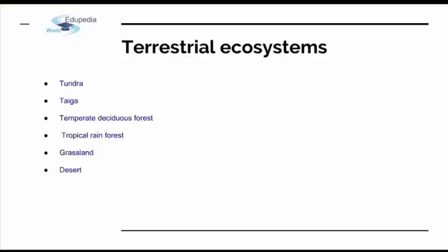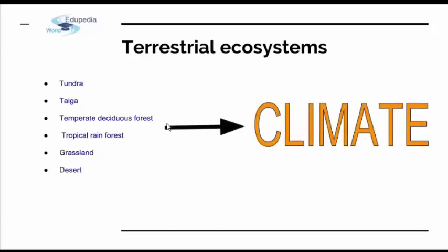Terrestrial systems, like aquatic ones, have their sub-regions as you can see on the left side. But each of them is determined mostly by one thing — similar to salinity in aquatic ecosystems, the biggest role in determining terrestrial ecosystems is played by climate. When we say climate, we think about temperature, precipitation, humidity, wind speed, and cloud cover, among other things.